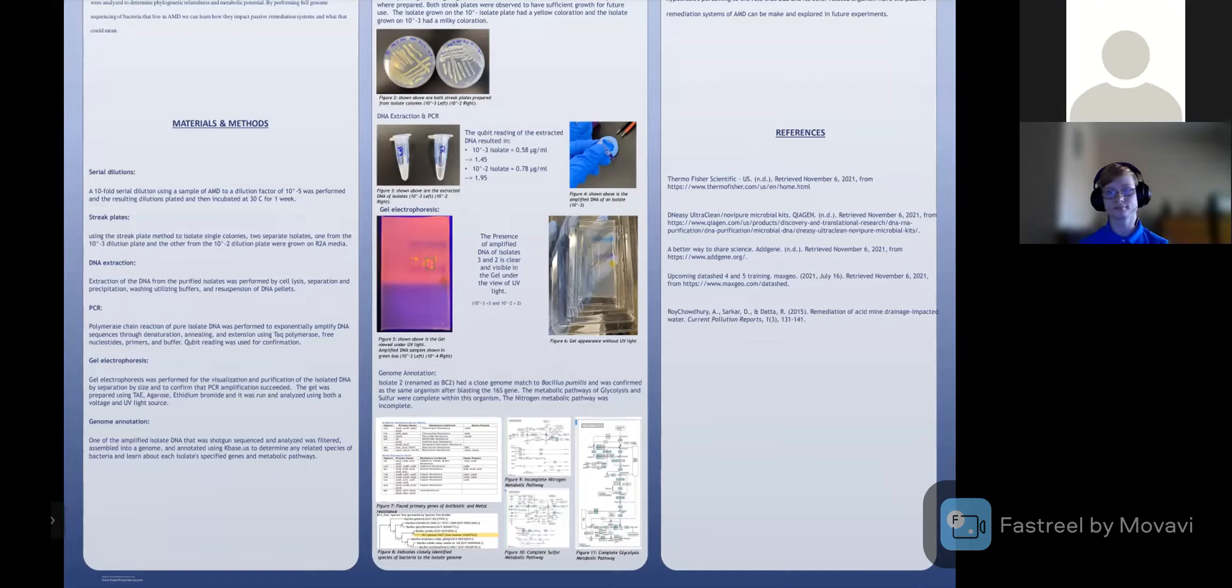Afterwards, using gel electrophoresis to ensure the presence of our amplified DNA of isolates, we can see on the right image, without the UV light, it's hard to tell where the DNA actually was amplified or if it was in presence. But when exposed to the UV light on the left side, within the green box being our isolates, we can confirm the presence of the DNA.